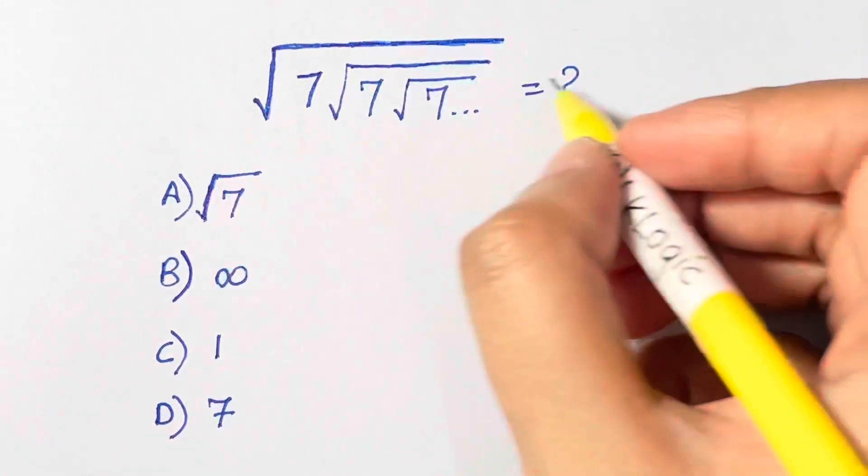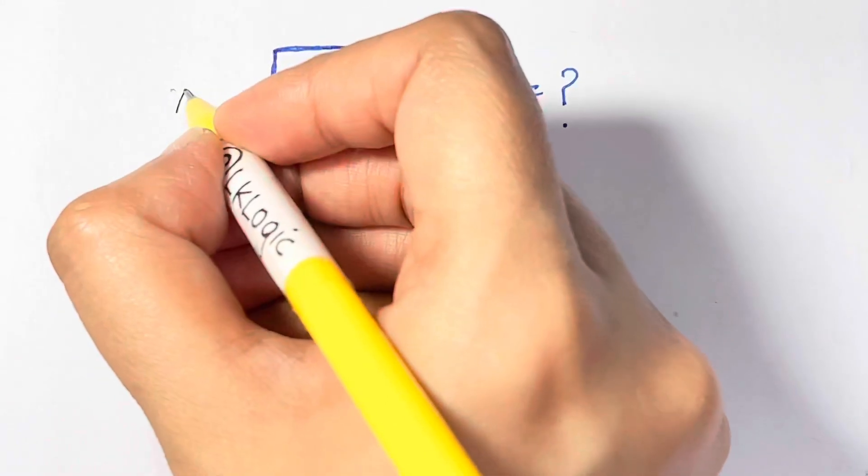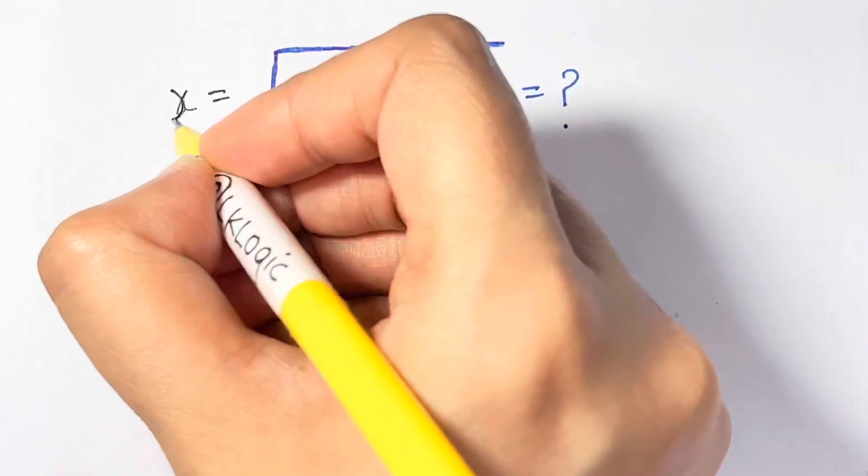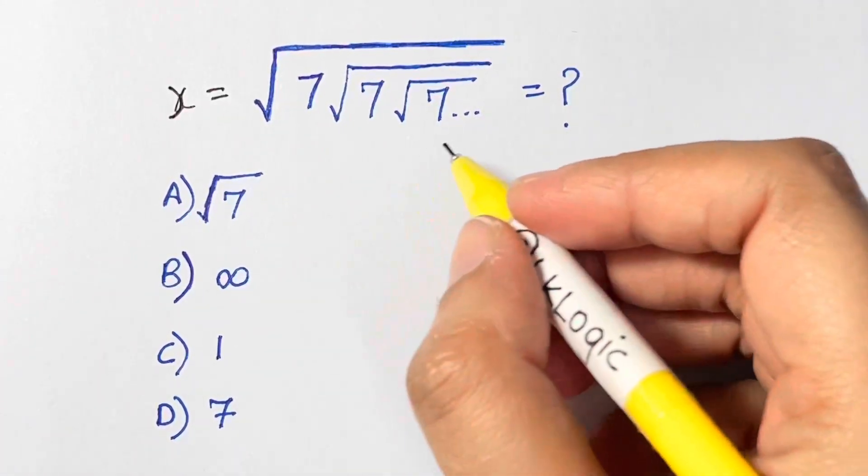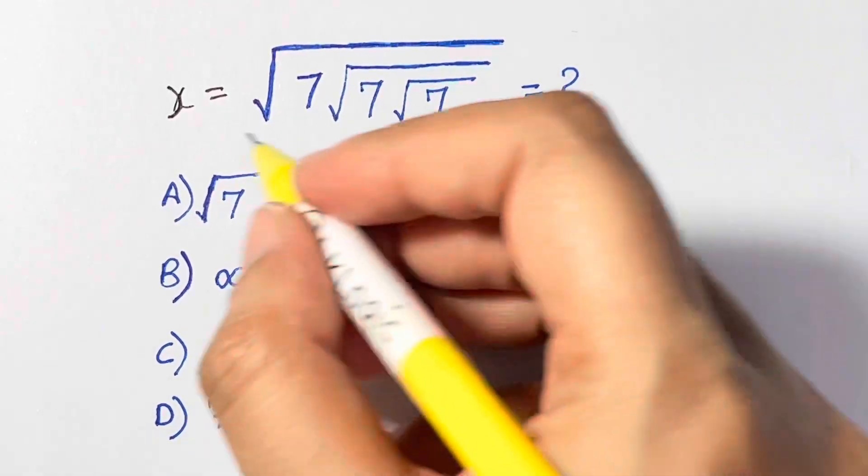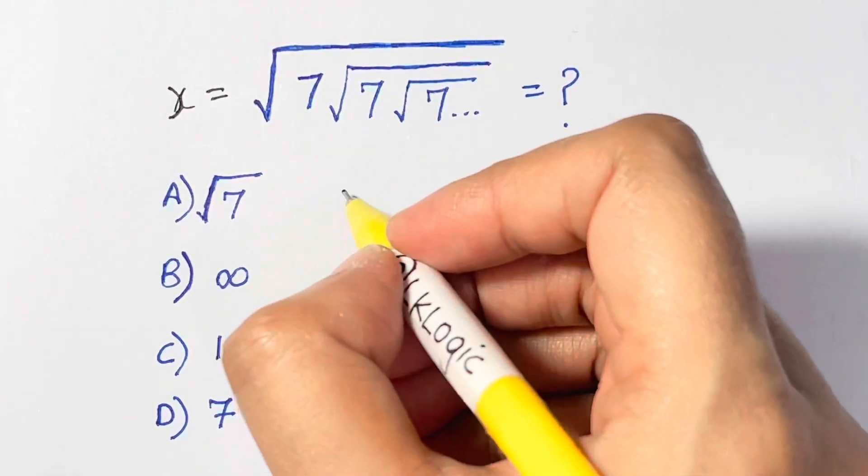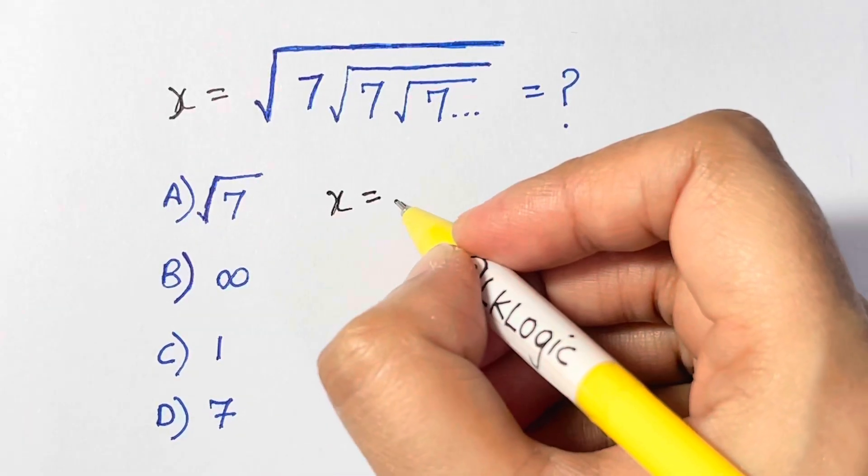So just put this whole term as x. Let x is equal to this, and then what we are going to do is square both sides. So when we square both sides, let me write down the equation again.